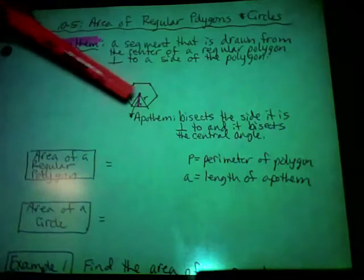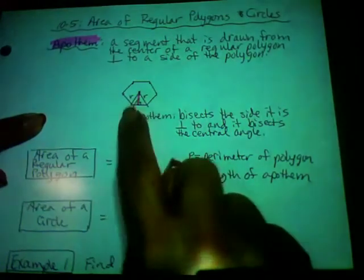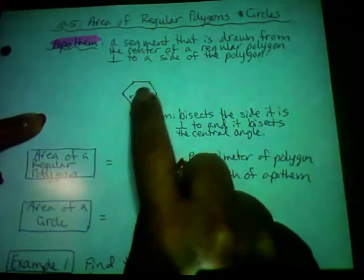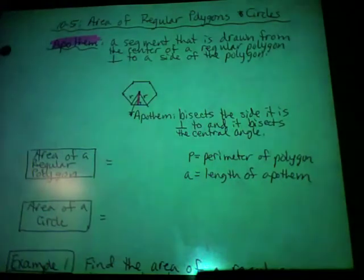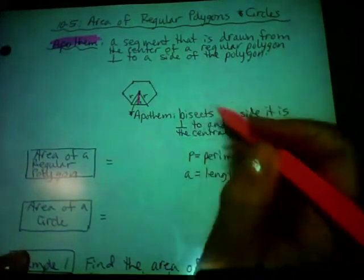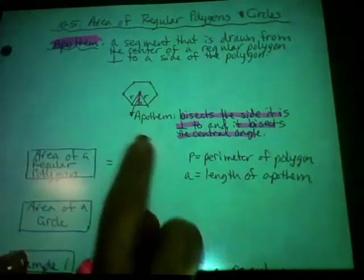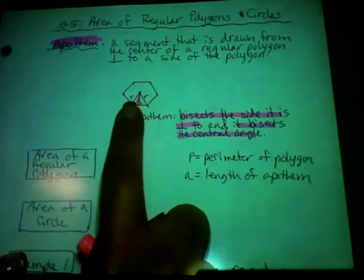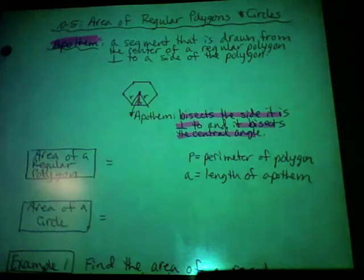From the center to a vertex is called R. If this polygon were inscribed in a circle, that vertex would be on the circle, and the distance from center to circle is the radius — that's why it's called R. The apothem bisects the side it is perpendicular to, and it also bisects the central angle — the angle whose vertex is at the center of the circle.